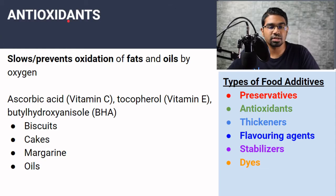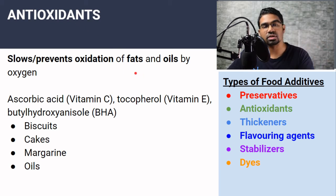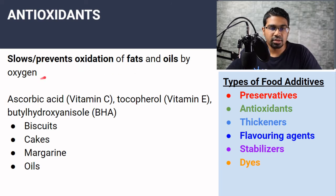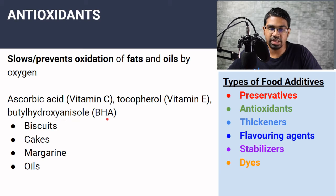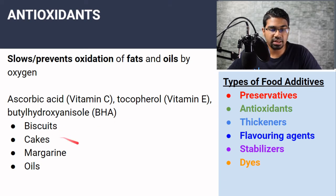Antioxidants, as the name suggests, prevent oxidation of food. Oxidation normally happens in fatty food because fats and oils, when exposed to oxygen in the air, will be oxidized, producing a rancid smell — this is when we say food has gone rancid. Some common antioxidants used are vitamin C (ascorbic acid), tocopherols (vitamin E), and butylhydroxyanisol (BHA). These are used to prevent oxidation of fats and oils in fatty foods such as biscuits, cakes, margarine, and oils.